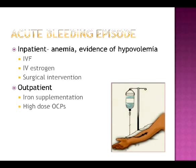If a woman presents with heavy bleeding and exhibits any signs or symptoms of hypovolemia, she should be admitted to the hospital and either treated with IV estrogen to stop the bleeding or have a surgical procedure, such as a D&C. If the bleeding is heavy but the woman is stable and her hemoglobin and hematocrit are close to normal, outpatient treatment with high-dose oral contraceptive pills can be used.